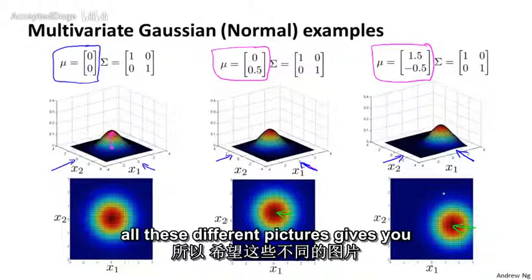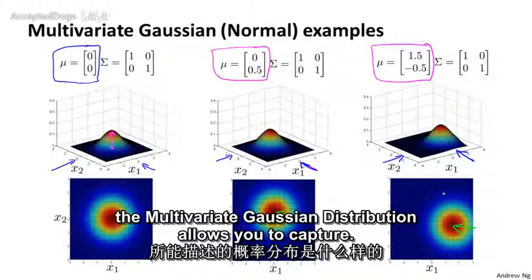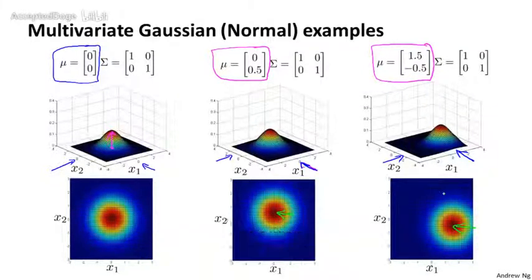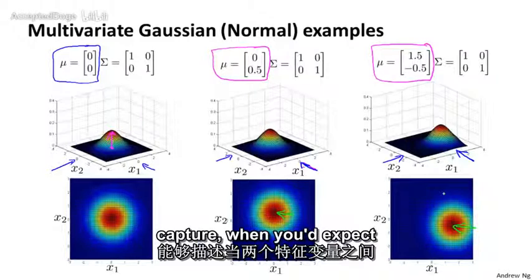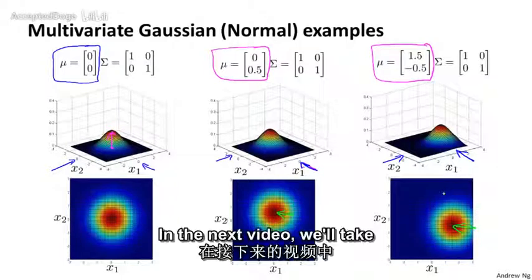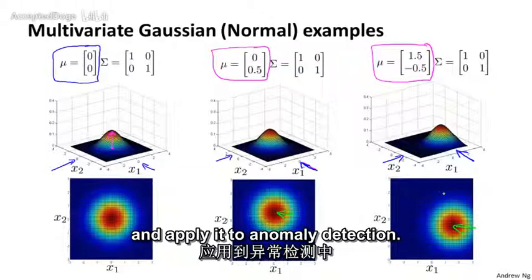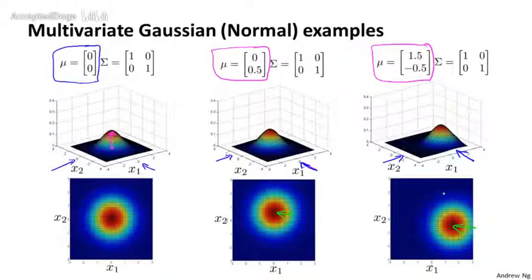So hopefully looking at all these different pictures gives you a sense of the sort of probability distributions that the multivariate Gaussian distribution allows you to capture. And the key advantage of it is it allows you to capture when you'd expect two different features to be positively correlated or maybe negatively correlated. In the next video we'll take this multivariate Gaussian distribution and apply it to anomaly detection.